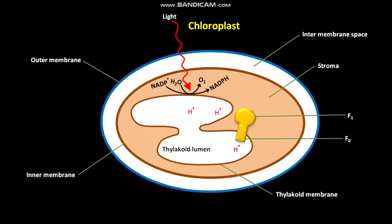Due to this H+ ion pumping, the H+ ion concentration increases in the thylakoid lumen, whereas the H+ ion concentration decreases in the stroma of the chloroplasts. As a result, a positive electric potential is formed on the luminal face of the thylakoid membrane,